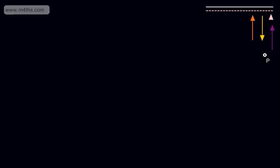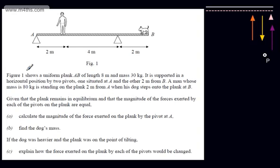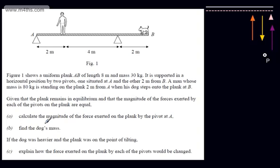In this video, we're going to continue our work with moments and look at two problems in context. In the first question, it says figure 1 shows a uniform plank AB of length 8 metres and mass 30 kg. It is supported in a horizontal position by two pivots, one situated at A and the other 2 metres from B. A man whose mass is 80 kg is standing on the plank 2 metres from A when his dog steps onto the plank at B. Given that the plank remains in equilibrium and that the magnitude of the forces exerted by each of the pivots on the plank are equal: A, calculate the magnitude of the force exerted on the plank by the pivot at A, and B, find the dog's mass.